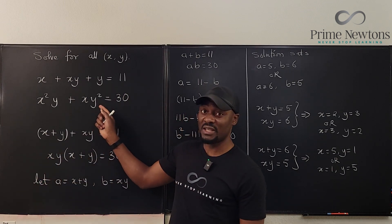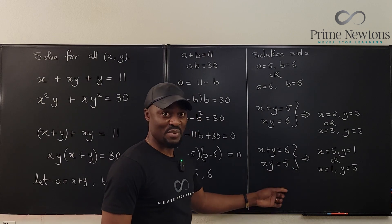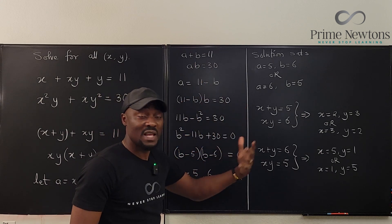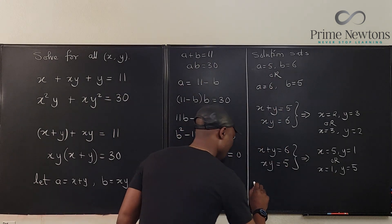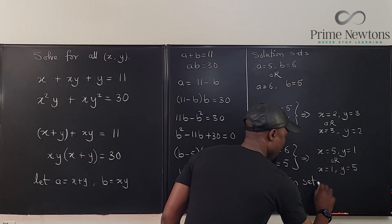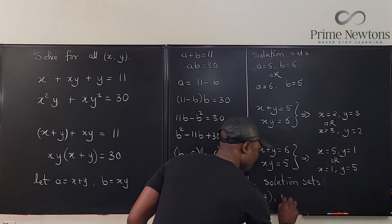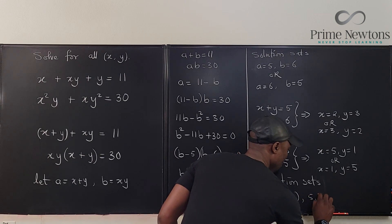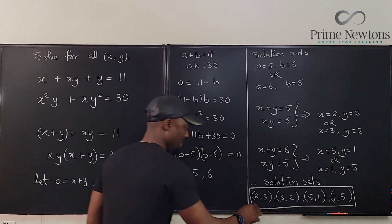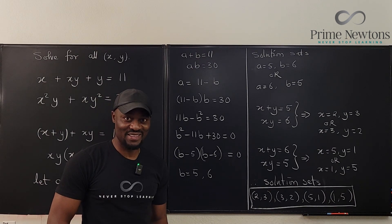This would have given us a quartic if we were trying to do some weird substitution, but this is a better and easier path to follow. You don't even have to solve this, you just need to look at this and tell yourself what a and b would be, the same way we're doing this. So therefore, solution sets are (2,3), (3,2), (5,1), and (1,5). All of these. Never stop learning. Those who stop learning stop living. Bye bye.